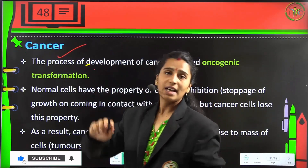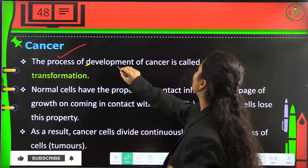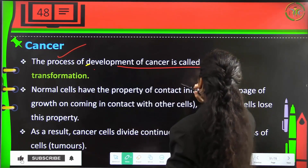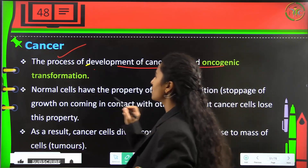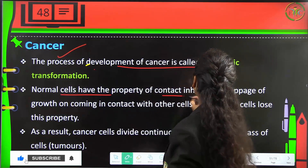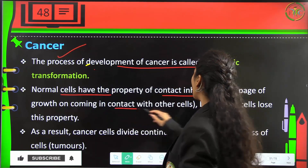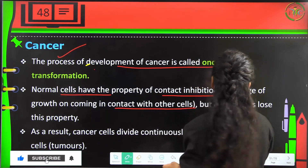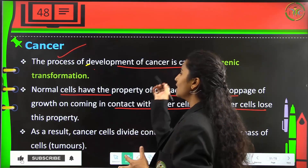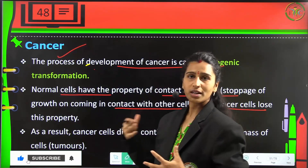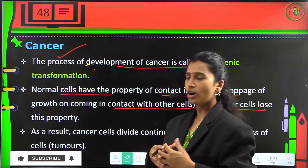Next is cancer. Cancer is essentially an oncogenic transformation. Normal cells have the property of contact inhibition — the stoppage of growth upon coming in contact with other cells — but cancer cells lose this property and continue to grow even when unwanted cells come in contact with them.